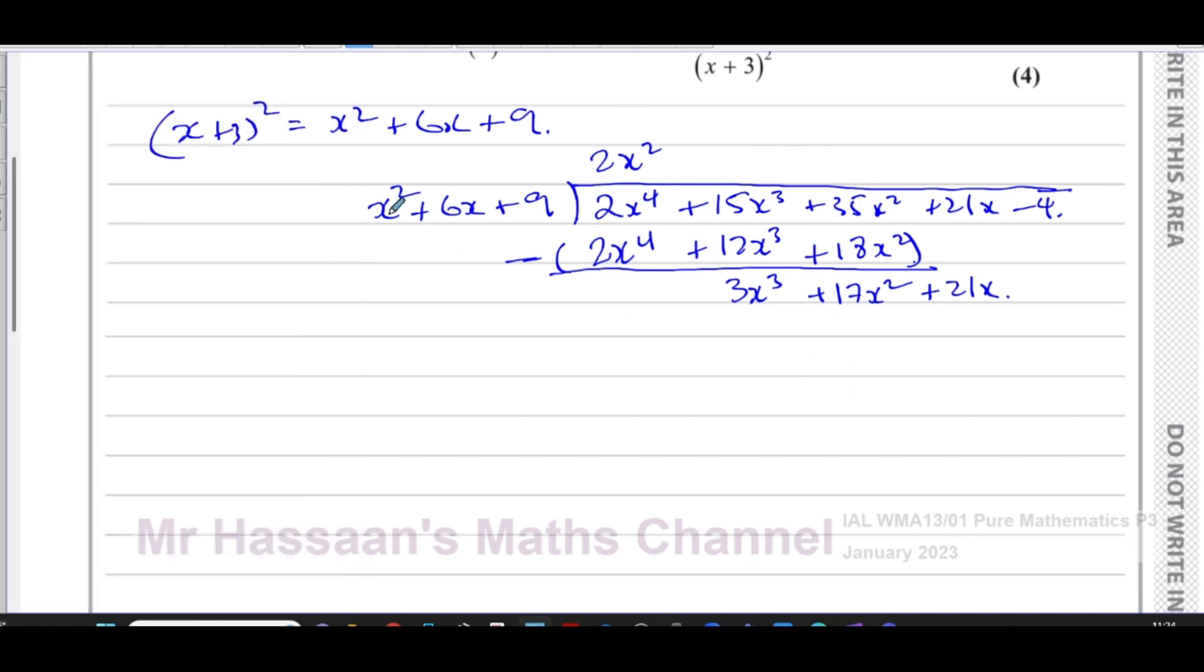Now I do the same thing. x squared goes into 3x cubed, 3x times. Then I multiply by 3x, so I got 3x cubed plus 18x squared and plus 27x. And then I subtract these two lines. This gives you zero again. 17x squared minus 18x squared is minus x squared. 21x minus 27x is minus 6x. I bring down the next term which is minus 4.